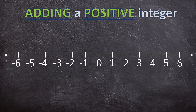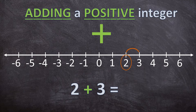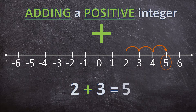When we add a positive integer, you will add the integer. Let's look at a few examples. Let's say we have 2 plus 3. 3 is a positive integer — there's no negative sign in front of the 3, so 3 is positive. So 2 plus the positive integer 3 will just be 2 plus 3, which gives us 5.